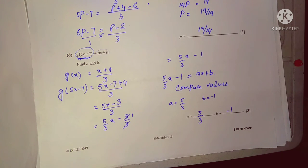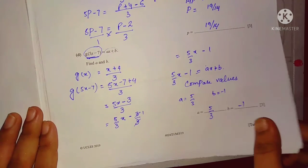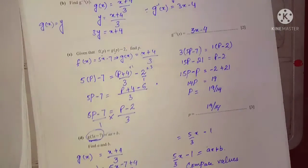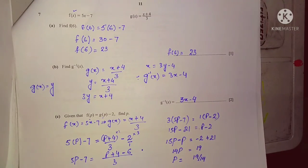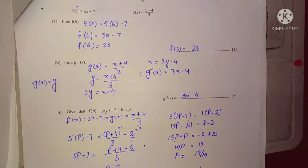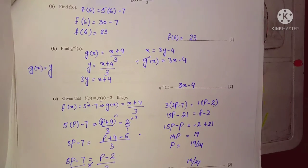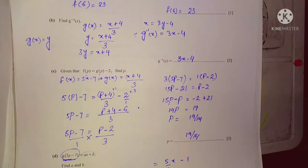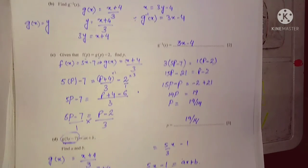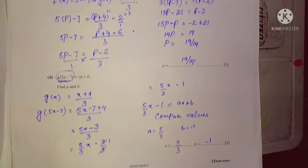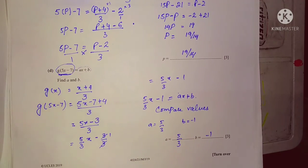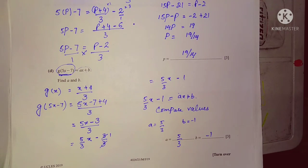I hope today's lecture is clear to you. Have a look at the whole sum — question number 7, parts a, b, c, and d. Do practice this because the more you practice, the clearer the concept will become. Take very good care of yourself. Thank you very much.